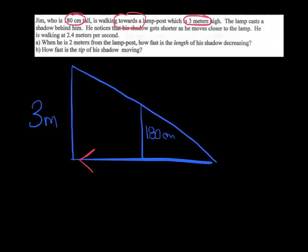And again, I just want to make note that Jim is walking towards the lamppost. So I'm going to put an arrow that he's walking this way. Therefore, his shadow is behind him. So I'm going to represent this distance from here to here as s, the shadow behind him. He notices his shadow gets shorter as he moves closer to the lamppost.